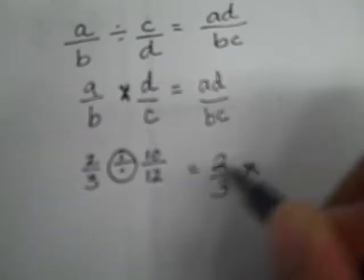So I have 2 thirds multiplied by the reciprocal, because when you divide, you're really multiplying by the reciprocal. So that's 12 over 10, and you find the reciprocal by inverting the numerator and denominator.